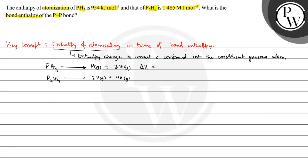Delta H is equal to 954 kilo joule per mole and here delta H is equal to 1.485. We can convert this mega joule per mole into kilo joule per mole by multiplying it by 1000. 1.485 multiplied by 1000 is 1485 kilo joule per mole.